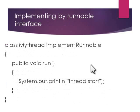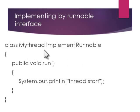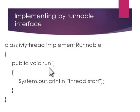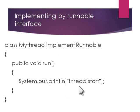Example of a thread using the Runnable interface: we create a class named MyThread and implement the Runnable interface. In that class, we create a run method with a simple print message. Then we start the thread.